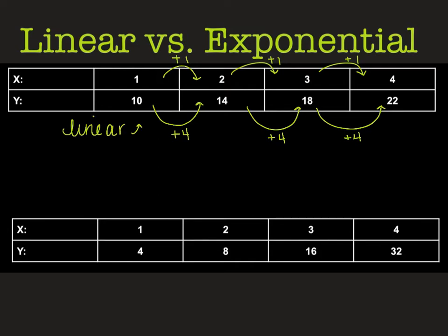On the other hand, we have what's called an exponential function. An exponential function isn't as easy as a linear. When you're looking at your y values of an exponential function, if we try the same method — okay, this is adding 4, but then over here we're adding 8, and then over here we're adding 16 — you can really see that these are not the same. So right off the bat, I know this is not going to be linear because these values are not the same.